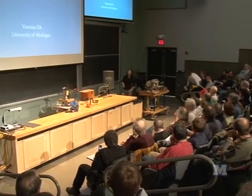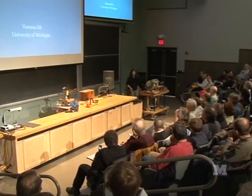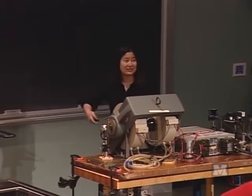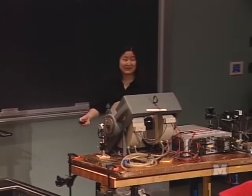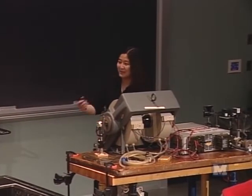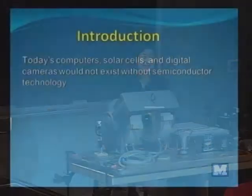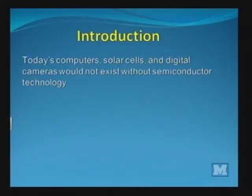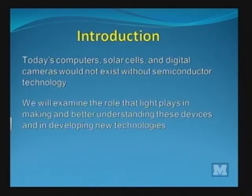You guys are a great crowd, and I really appreciate that. Today's talk is about light and semiconductor devices. As an introduction and overview of what I'm going to talk about, I'll cover a few different subjects. The first is how important semiconductors are to today's technology. Semiconductor devices are in our computer microprocessors, in solar cells, and in our digital camera sensors, and without semiconductor technology, these devices would not exist as they do today. We'll examine the role that light plays both in making and better understanding these devices and in developing new technologies that we're working on at Michigan and researchers are working on around the world.